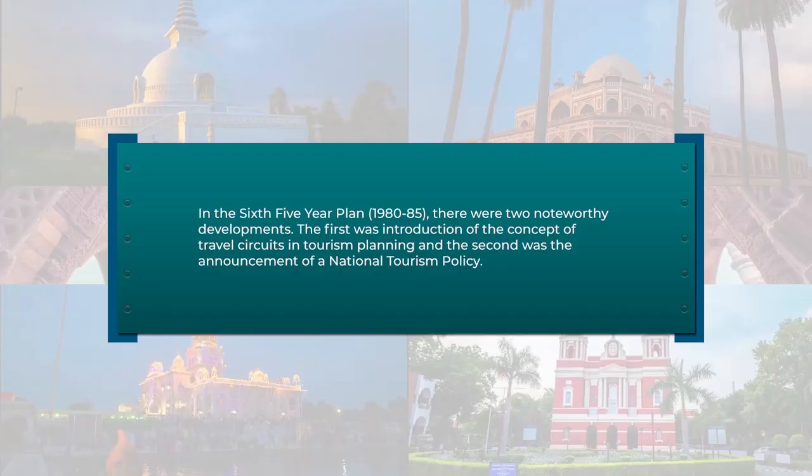In the sixth five-year plan, which was from 1980 to 1985, there were two noteworthy developments: the introduction of the concept of travel circuits in tourism planning, and the announcement of the first national tourism policy. In November 1982, the Government of India announced the first tourism policy of India.